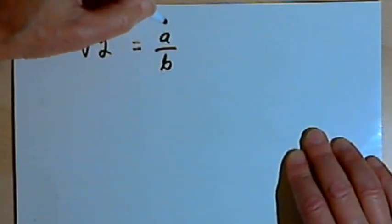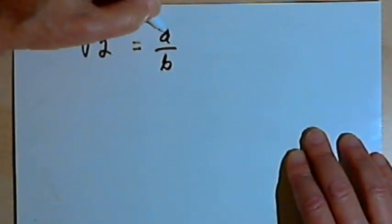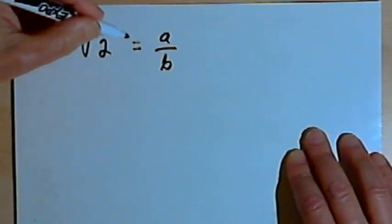I'm assuming that the fraction a over b is reduced to its lowest terms. In other words, the numbers a and b don't have any common factors because the fraction has been reduced.